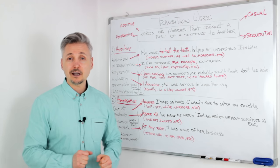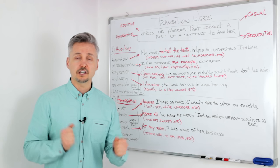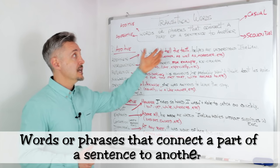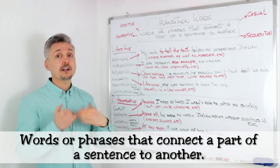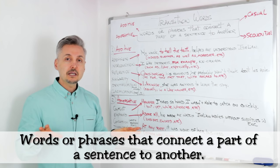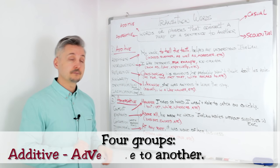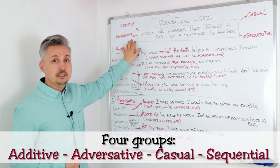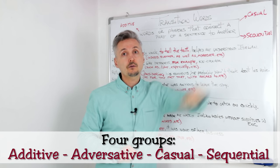We're going to talk about transition words. But what are transition words? They are words or phrases that connect a part of a sentence to another part of a sentence. They can be divided into four groups: additive, adversative, causal, and sequential.